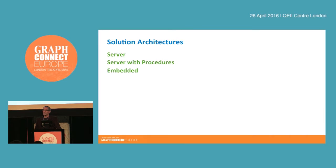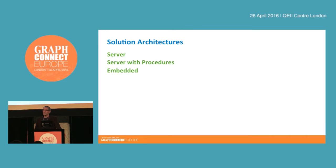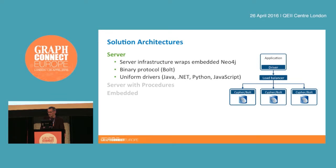So you're planning to build a Neo4j-based application and it's destined for production. One of the first things you'll have to think about is the kind of solutions architecture you're going to adopt — effectively how you're going to incorporate Neo4j into your application. There are several options: you can use the server version of Neo4j, the server together with stored procedures, or you can use Neo4j as an embedded graph database and host it in your own Java process.